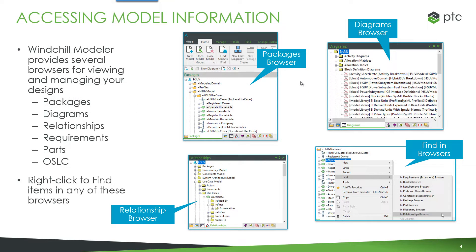To access model information, there are several browsers. We can see in the images that we have a packages browser, which shows the package hierarchy and the contents of those packages. In the image we can see use cases and use case diagrams. We also have a diagrams browser where we can see diagrams of specific types — in the example, block definition diagrams — providing another easy way to locate information.